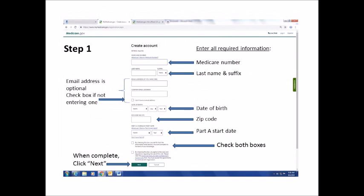You will now see this screen where you will need to enter your personal data. Enter your Medicare number with no spaces or dashes, then your last name and suffix, if any, exactly as shown on your Medicare card. Next, you may enter an email address if you have one. You will need to re-enter it to confirm. An email address is optional.